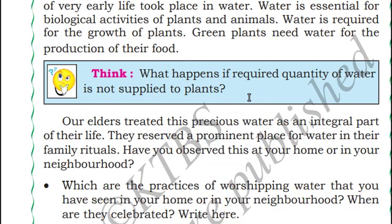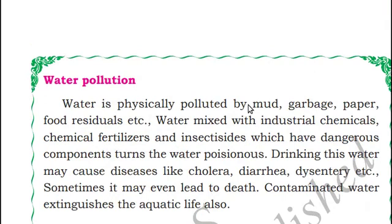Water pollution — water could be polluted by garbage, chemical fertilizers such as insecticides and pesticides, and the waste material sent out by factories. All of these have a negative impact on the quality of water.